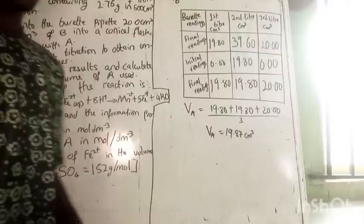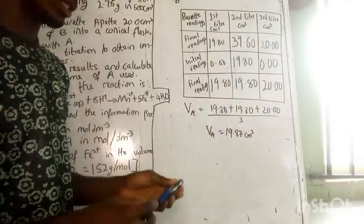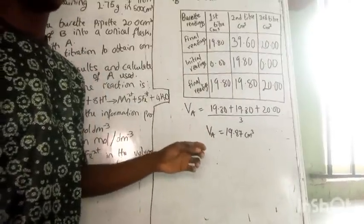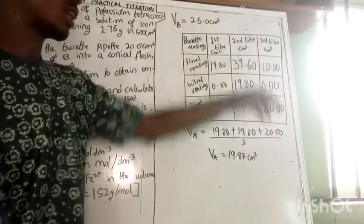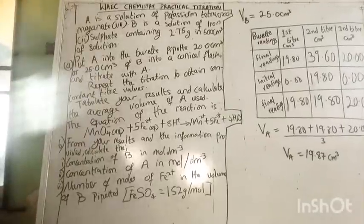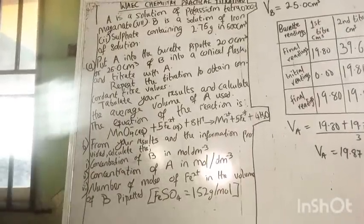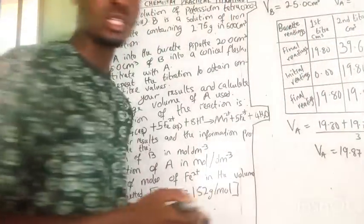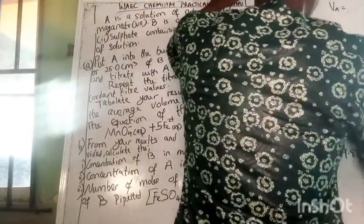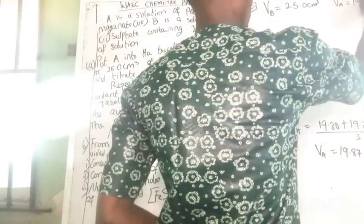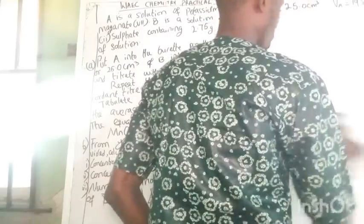The average concordant titre value I obtained is 19.87cm³ after recording the first, second, and third readings in my table. The volume of the pipette is recorded at the top of the table. Now we move to the calculation section. The question asks us to calculate the concentration of B in mol/dm³.